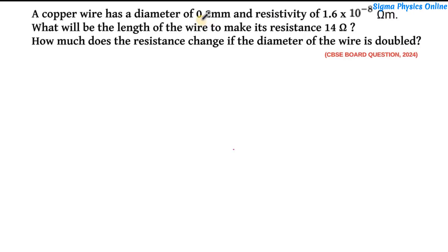Alright, so here we have a copper wire whose diameter is given and its resistivity is given. We'll have to find out the length of that wire which will give it a resistance of 14 ohm. Also, how much does the resistance change if the diameter of the wire is doubled? We'll have to find out what will be the change in the value of resistance if we double the diameter of that wire.